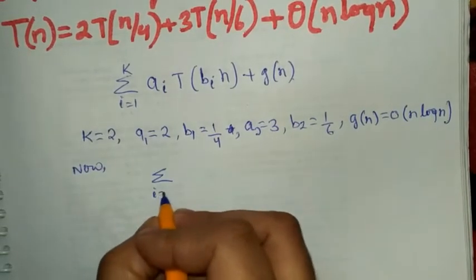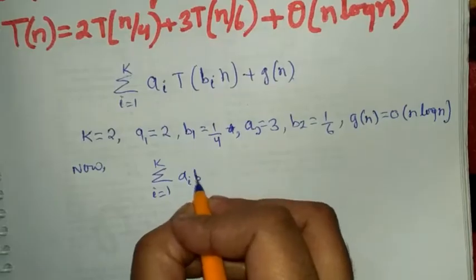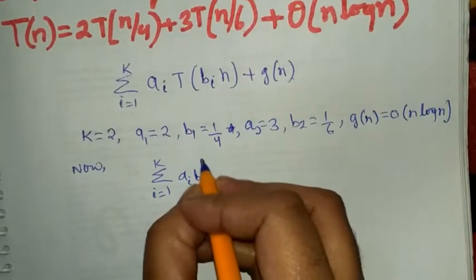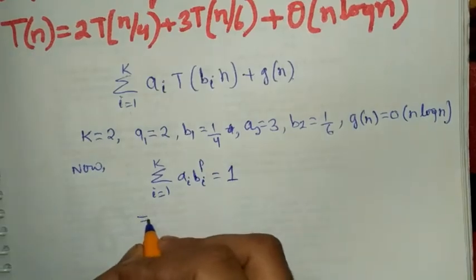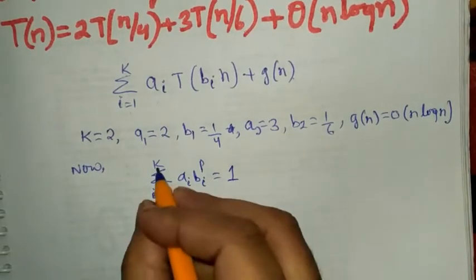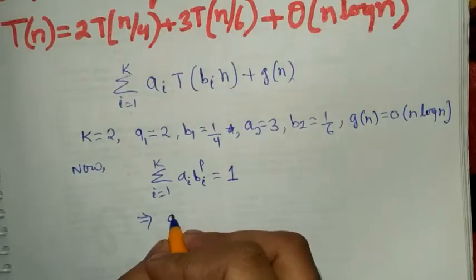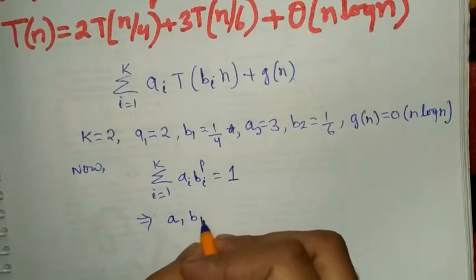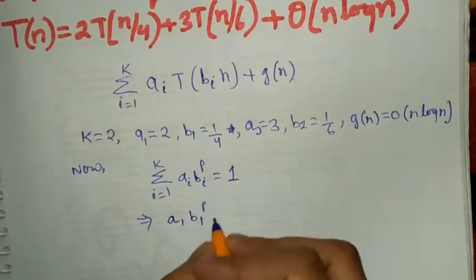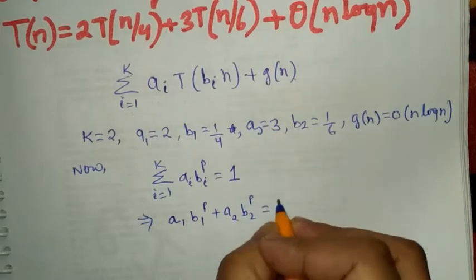The summation from i equals 1 to k of a_i times b_i to the power p equals 1. So with k equals 2, this becomes: a1 times b1 to the power p plus a2 times b2 to the power p equals 1.